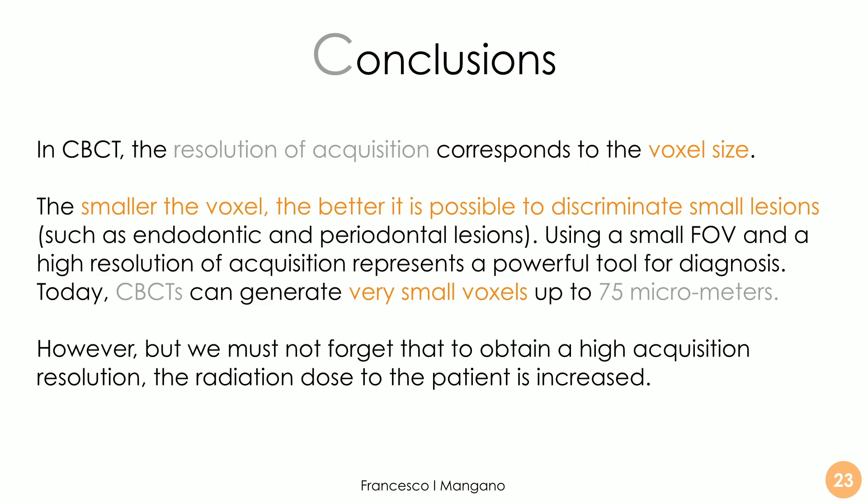In conclusion, when we talk about resolution of acquisition in CBCT, we are talking about the voxel size. The smaller the voxel, the better it is possible to discriminate small lesions — for example, endodontic or periodontal lesions — and this is possible using a small field of view with a higher resolution of acquisition. Today CBCT can generate very small voxel sizes, up to 75 micrometers. We must not forget, however, that higher resolution acquisition means a higher radiation dose for the patient. Clinicians are therefore searching for low-dose protocols, which can still allow proper diagnosis and treatment planning. We need to balance the different situations accordingly.